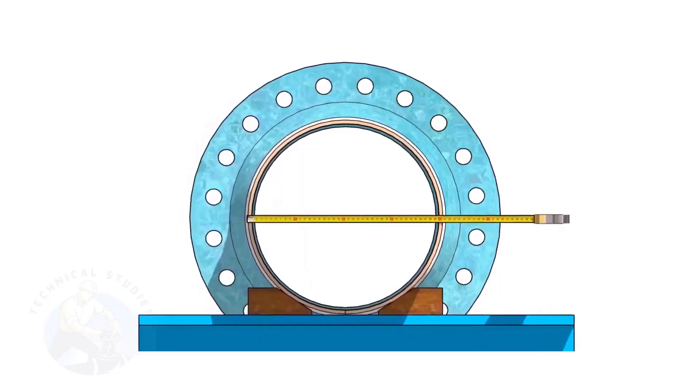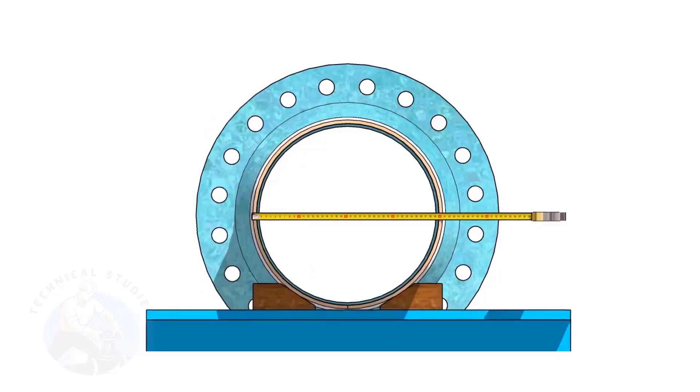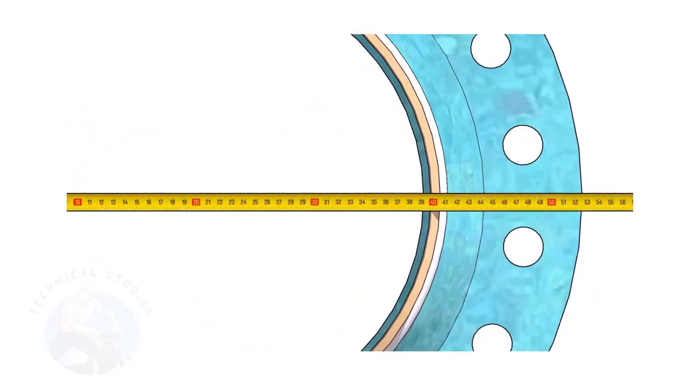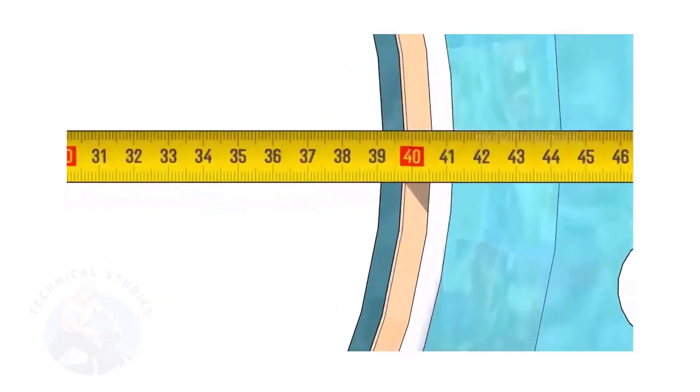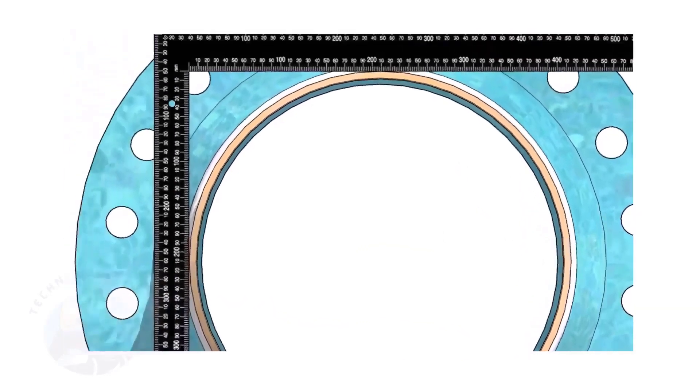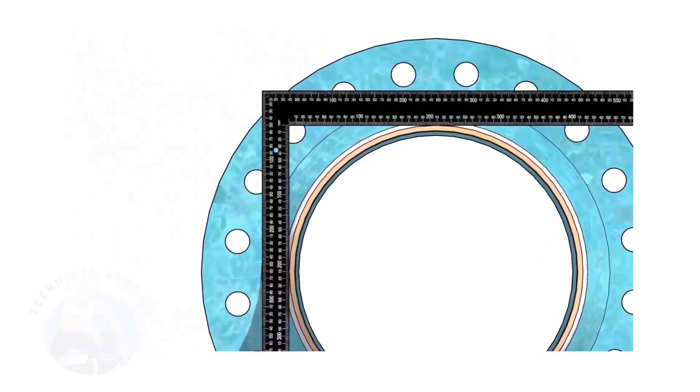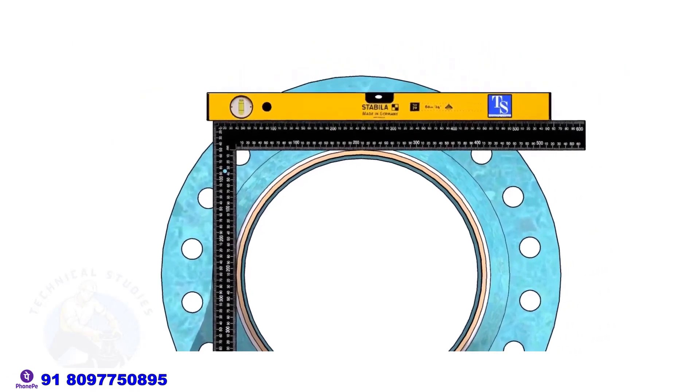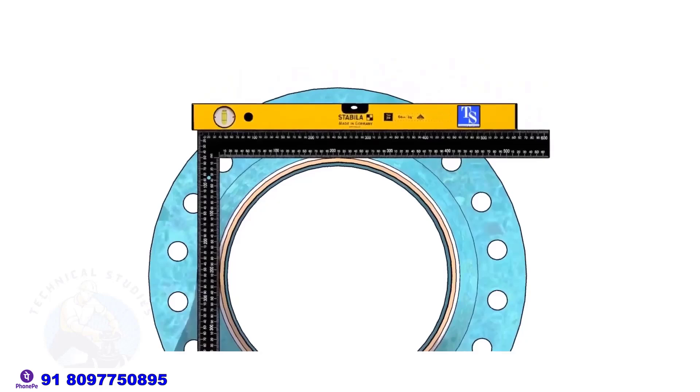Check the outer diameter of the pipe. Here, the diameter of the pipe is 406 millimeters. Hold a large right angle on the pipe as shown. Put a spirit level on the right angle and correct the top level.